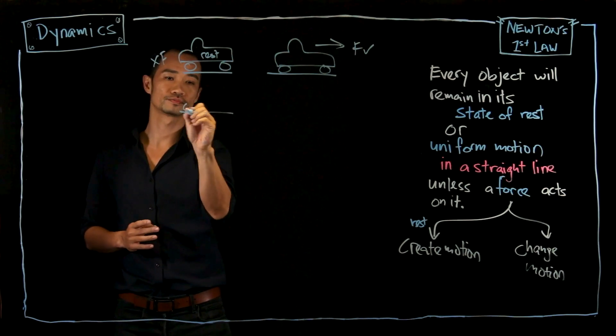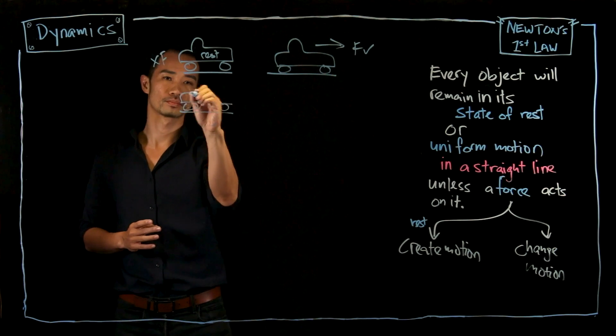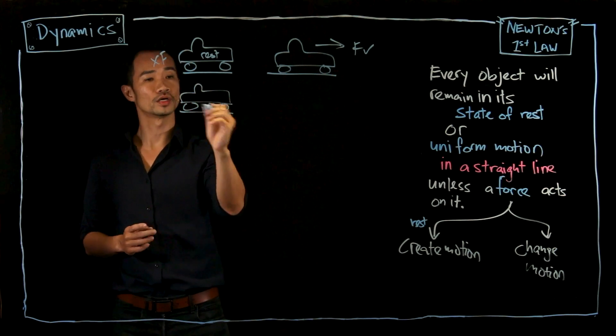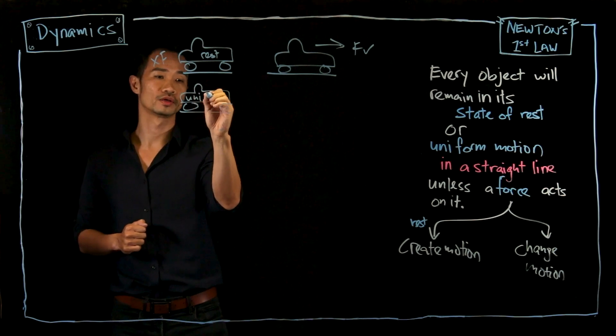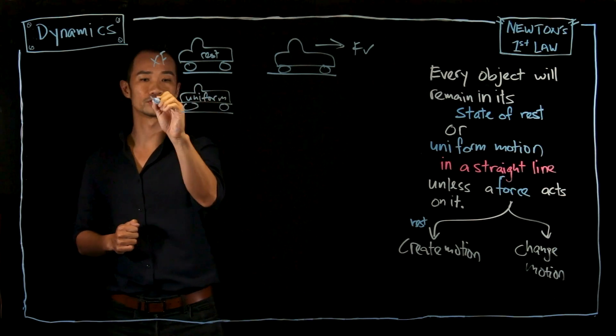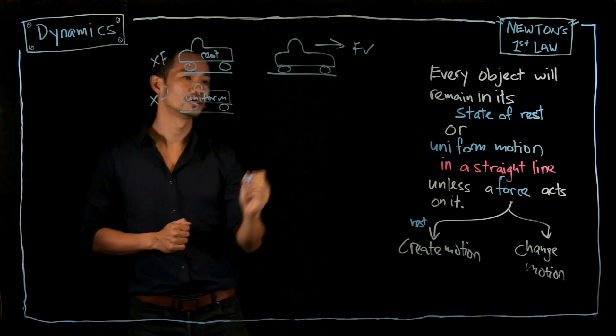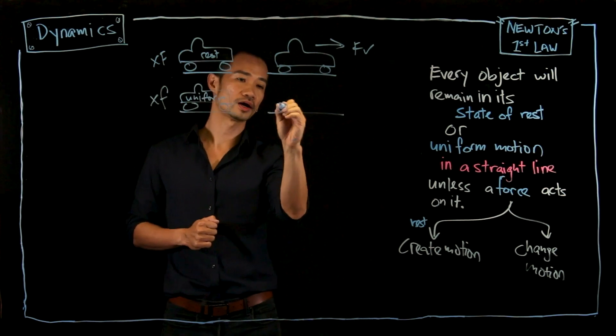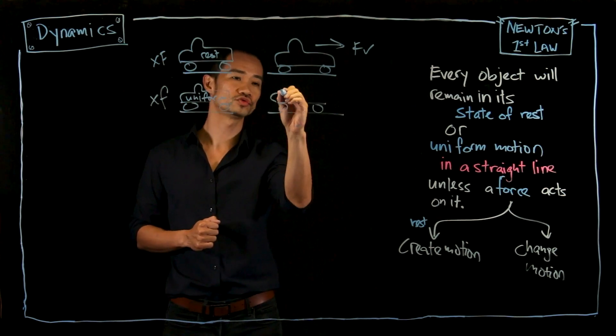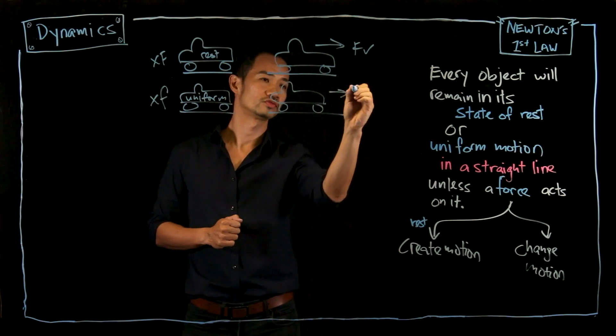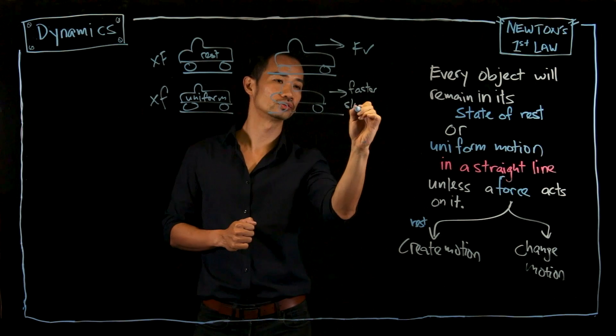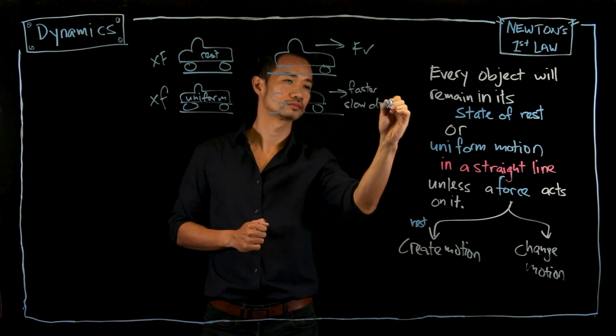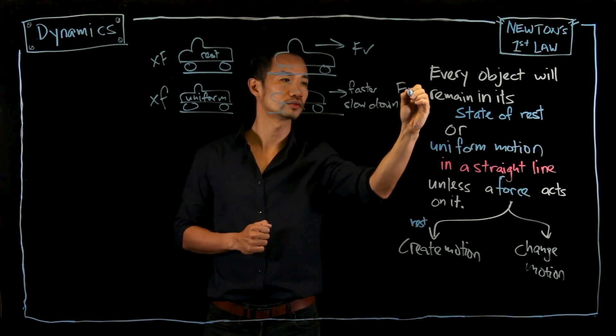If it is already moving, if the velocity is uniform, means it is the same, then there is no extra force needed. If we want the car to either move faster or to slow down, then we need to have a force.